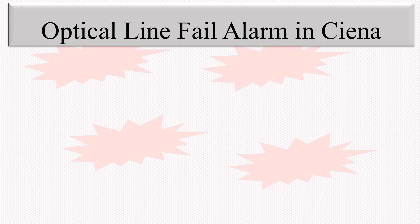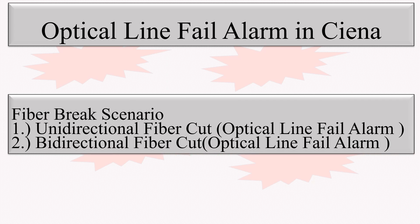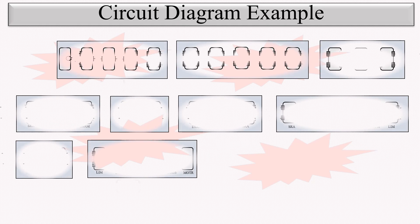Hello friends. In today's video we will discuss about the optical line fail alarm which appears in Ciena and in amplifier devices. We will discuss in detail about optical line fail alarm in two scenarios: unidirectional fiber cut and bidirectional fiber cut. We will see on which device of Ciena the optical line fail alarm appears and on which port it appears.